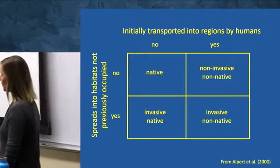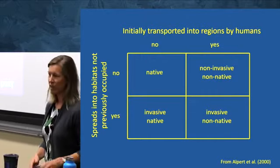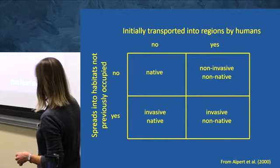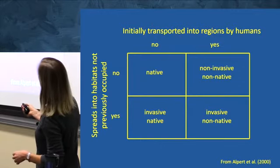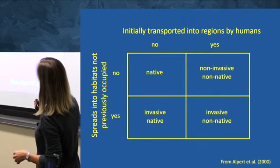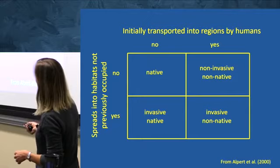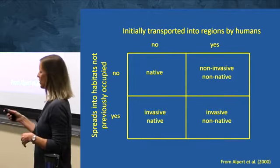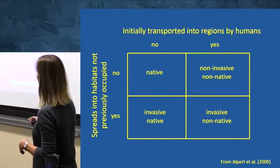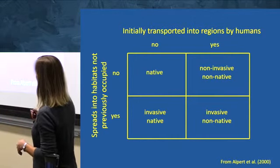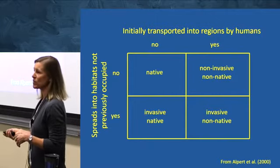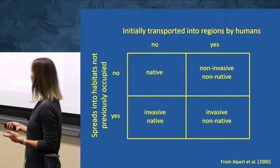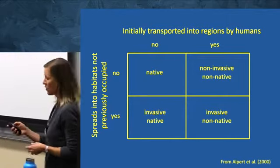This table illustrates what I mean when talking about invasive versus non-native. Based on a paper — if a species was initially transported into a region by humans, we consider it non-native. If it can then spread into habitats not previously occupied, we consider it invasive. It's really the invasive non-native plants and animals that invasion biologists study — these are the ones that often have impacts we don't care for in systems.